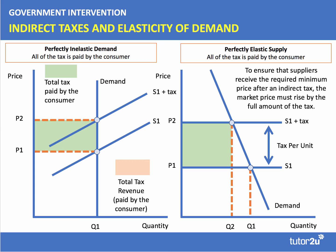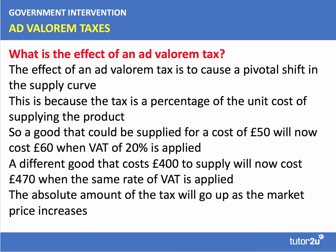In the next example, there is a perfectly elastic supply curve. With a perfectly elastic supply curve, it doesn't matter what the elasticity of demand is — all the tax will be paid by the consumer. The market price must rise by the full amount of the tax.